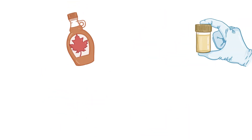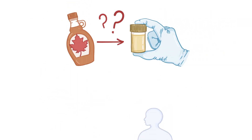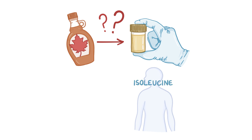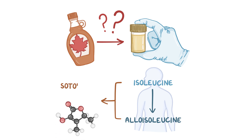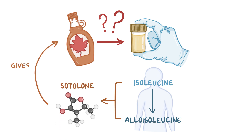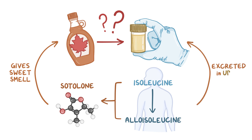So where does the maple syrup-smelling urine come from? Isoleucine is spontaneously converted into alloisoleucine in the body, and elevated plasma alloisoleucine is a sure sign of maple syrup urine disease. Isoleucine and alloisoleucine can also be converted to sotolone, which is the molecule that gives maple syrup and caramel their sweet smell. This molecule is excreted in the urine with other metabolic products, which is why the urine has a distinct sweet odor.